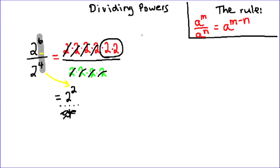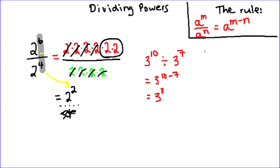Let's try a couple more examples. If I have 3 to the power of 10 divided by 3 to the power of 7, that is equal to 3 to the power of 10 minus 7, or 3 to the power of 3. With variables: w to the power of 8 divided by w to the power of 4 equals w to the power of 8 minus 4, which is w to the power of 4.